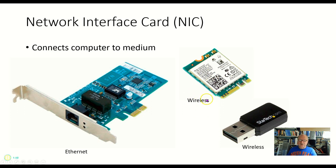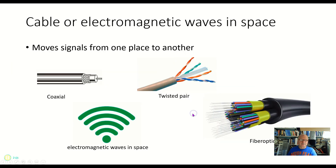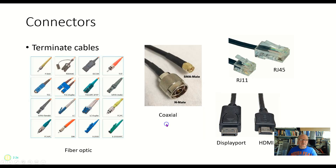Here's a wireless NIC, and here's another version of a wireless network interface card. Cables themselves are part of the physical medium: coaxial cable, twisted pair cable, fiber optic cables — or in this case no cable at all. I'm just using space and electromagnetic waves going through space. Yes, I know you can't touch it, but it's also part of the physical layer.